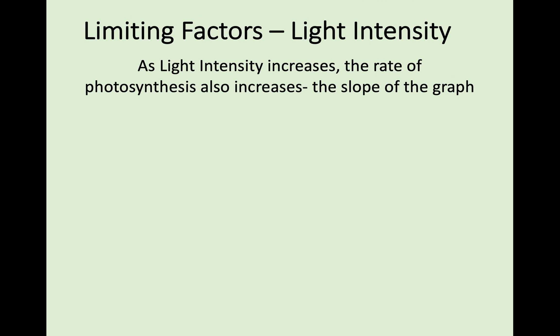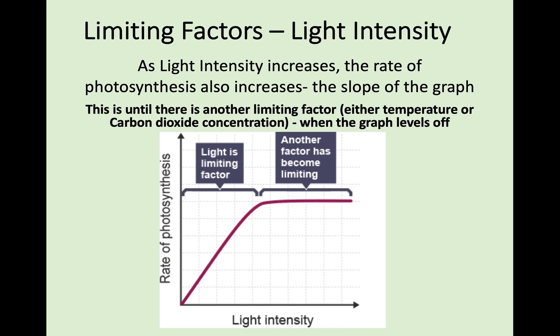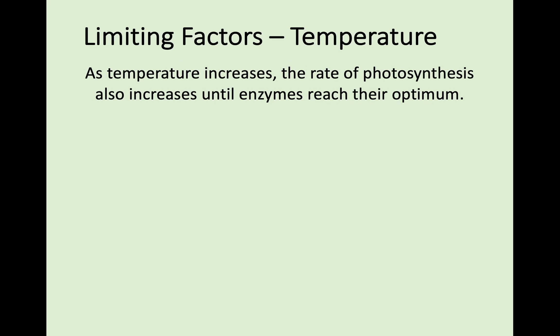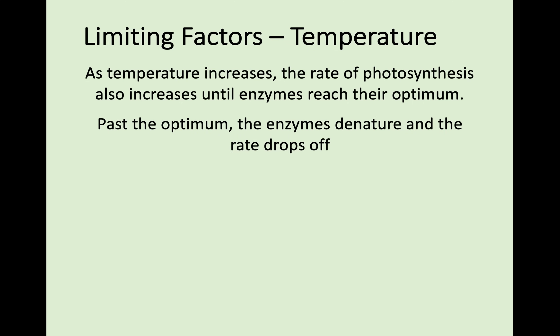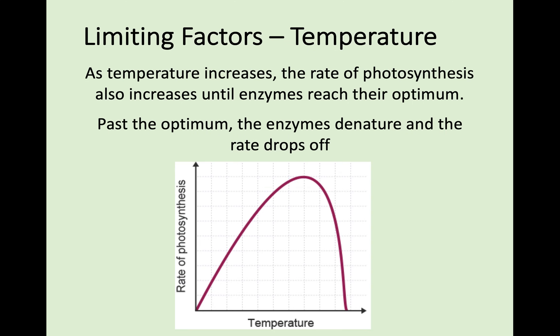If we look at light intensity — plants need light in order to survive. As light intensity increases, the rate of photosynthesis also increases up to a point where light intensity is still increasing but something else is holding it back. That must be either temperature or carbon dioxide concentration. Finally, when we look at temperature, the main point of temperature being a limiting factor is because of the enzymes in stage 2. As temperature increases, the rate of photosynthesis also increases until enzymes reach their optimum. Just like any other enzyme reaction, you get a curve where the rate of photosynthesis increases with temperature until it hits the optimum point — then the enzymes become denatured and the rate of activity absolutely plummets.